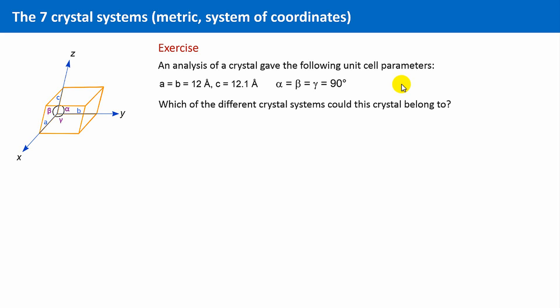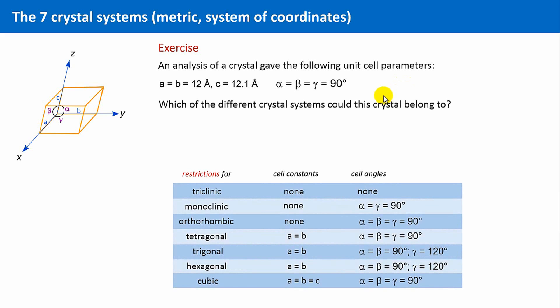And the question is now, which of the different crystal systems could this crystal belong to? And now we have a look at the table again, and we see the following. The cubic one doesn't fit. All cell constants have to be the same here, this is not the case for our crystal. The hexagonal and trigonal system can be excluded as well, because there is the gamma angle. In our case, it is 90 degrees and not 120 degrees.